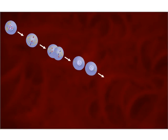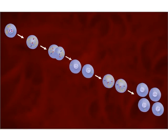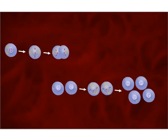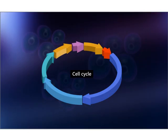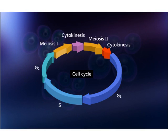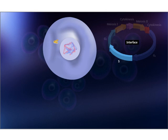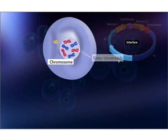For reduction in the number of chromosomes in the new haploid daughter cells, two rounds of divisions are necessary: meiosis one and meiosis two. As in mitosis, meiosis begins after a cell has successfully completed the G1, S, and G2 stages of interphase. During the S phase of interphase, the DNA is replicated, producing two copies of each chromosome called sister chromatids.